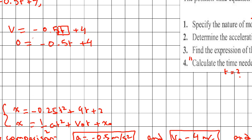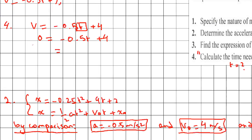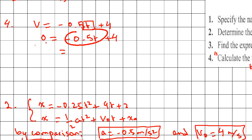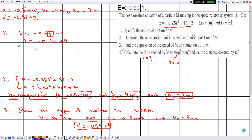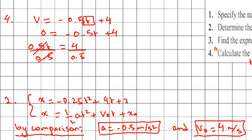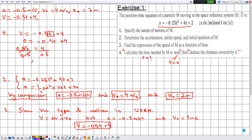Rearranging the equation by moving -0.5t to the left side: 0.5t = 4. Dividing both sides by 0.5 gives t = 8 seconds. So the particle M takes 8 seconds to stop, which is expected since the particle is decelerating.